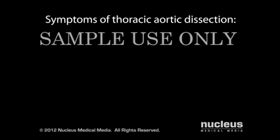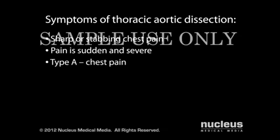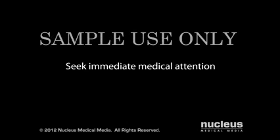The most common symptom of thoracic aortic dissection is sharp or stabbing chest pain, usually sudden and severe. If you have a type A dissection, you're most likely to feel pain in your chest. If you have a type B dissection, you're more likely to feel pain in your back than your chest. If you have these symptoms, you should seek immediate medical attention, as this condition can be life-threatening.